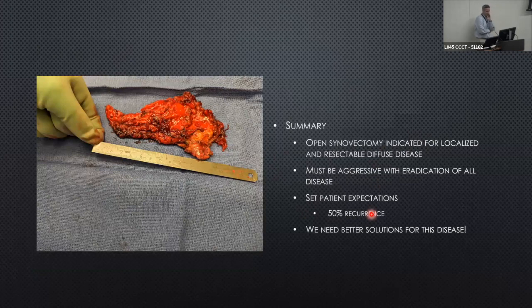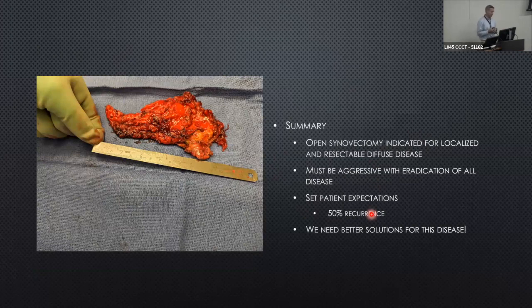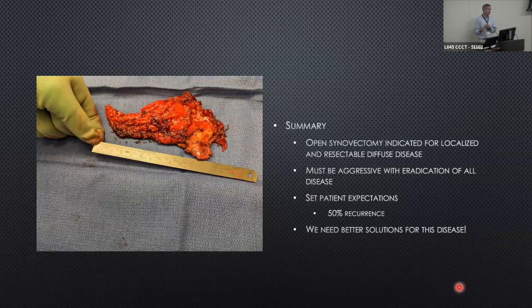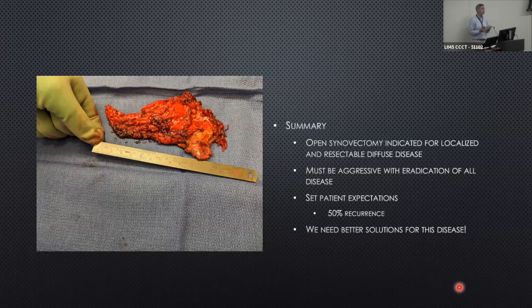In summary for open synovectomy: it's indicated for localized and resectable diffuse disease. If you go the surgical route, one thing we know for sure is that if you leave stuff behind, it will regrow — hence the need for these big open procedures to achieve complete synovectomy. It's important to have discussions about the recurrence rate before leaving the operating room. We collaborate with medical oncology colleagues and pharmaceutical companies because we need better solutions — doing multiple big operations over and over, we're clearly not winning the battle in the majority of patients.